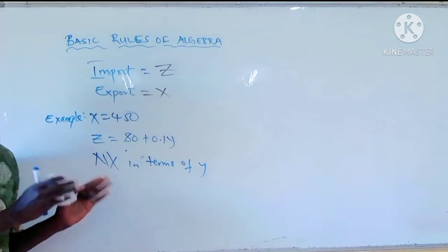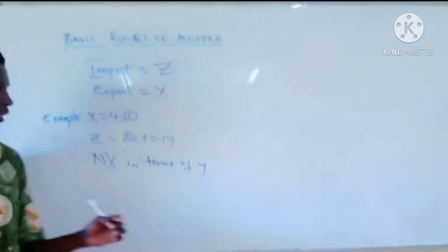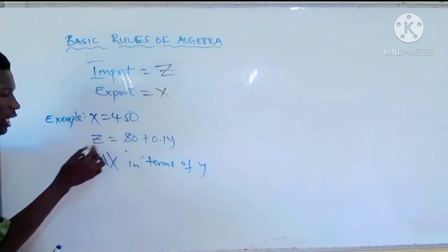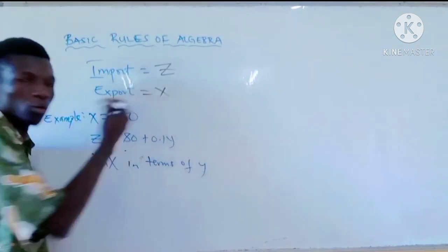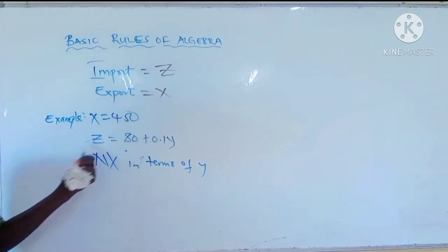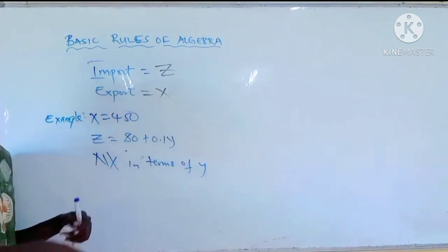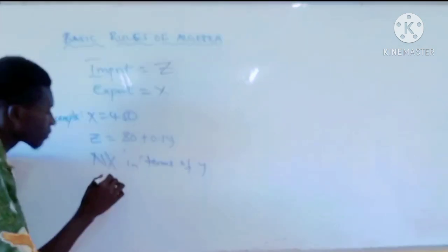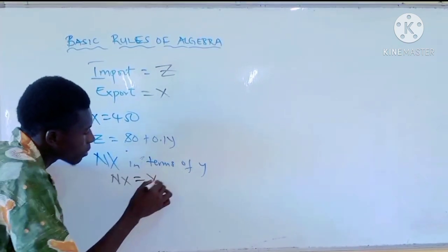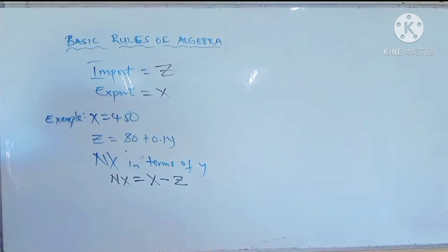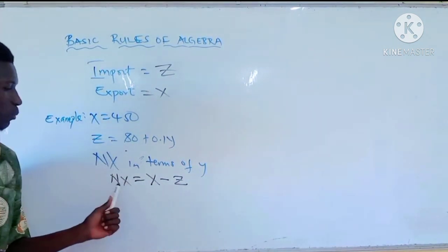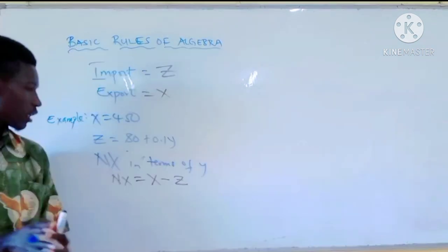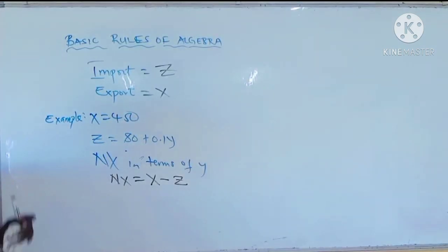Finding an expression means you are not going to leave your answer in an equation form. Net export in terms of Y means Y must be in the equation. The formula for net export is: net export equals export minus import. Net export means you export more than you import; net import means you import more than you export.